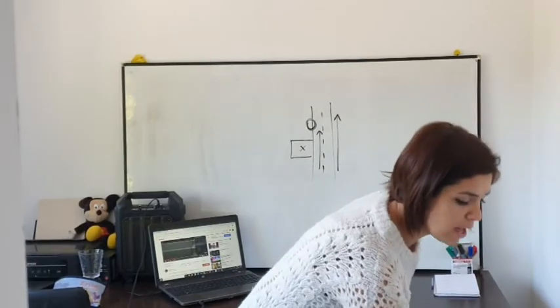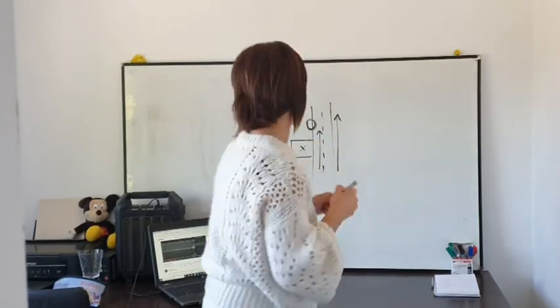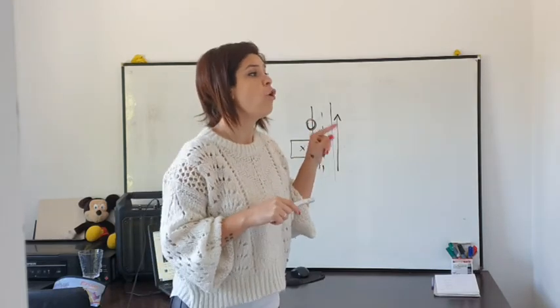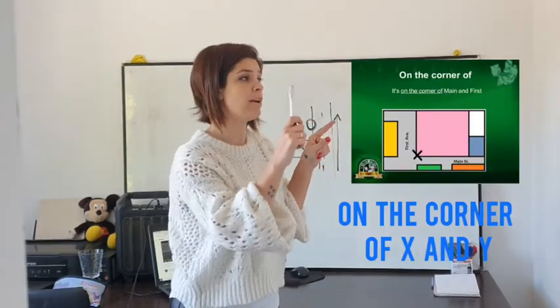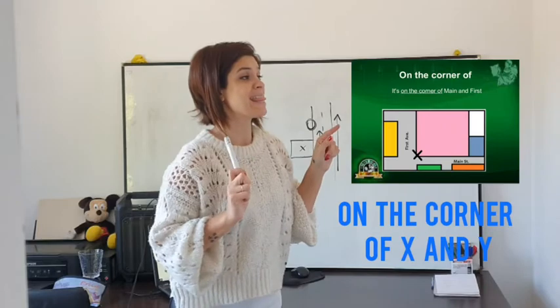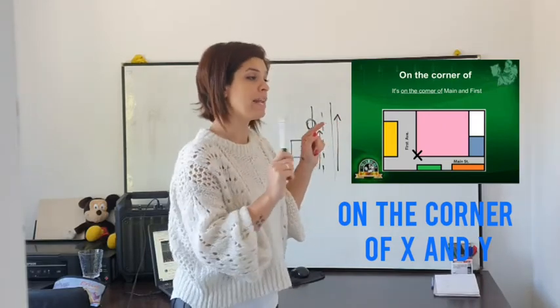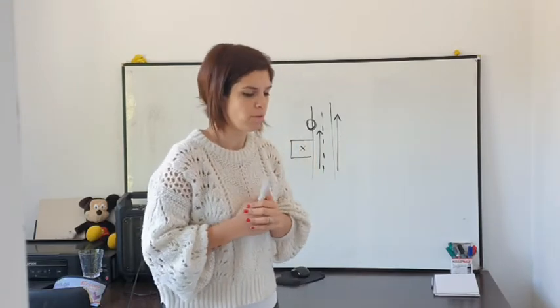Then another word that we have is this, for example. I'll show you a photo here. And this is on the corner of. Imagine we have Olavadia and Lavasse. We can say that the institute is on the corner of Olavadia and Lavasse Street. That is on the corner of.